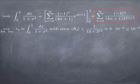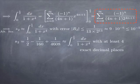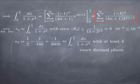Writing out the terms of S₂: for n=0, (−1)⁰/[1·2¹] = 1/2; for n=1, (−1)¹/[5·2⁵] = −1/160; for n=2, (−1)²/[9·2⁹] = 1/4608. This sum of three terms approximates the integral with at least four exact decimal places. If we want better accuracy, we simply add more terms.